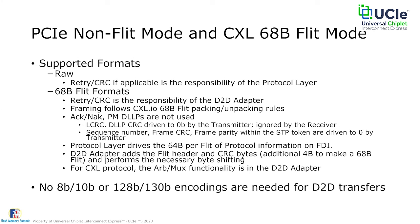For PCIe non-FLIT mode and CXL 68-byte FLIT mode: PCIe up to version 5.0 used a non-FLIT, transaction-layer-packet-based framing. CXL up to version 2.0 used a 68-byte FLIT format for speeds up to 32 gigatransfers per second. Both of these are mapped onto UCIe. For PCIe non-FLIT mode, to keep logic overhead small and ease the transition, UCIe leverages the 68-byte FLIT format for both protocols. These FLITs look very similar to what's defined in CXL, with retry CRC handled by the die-to-die adapter and framing following CXL.IO framing for the 68-byte FLIT.